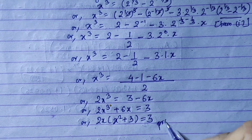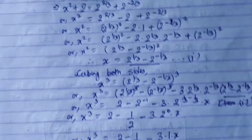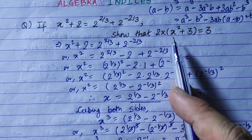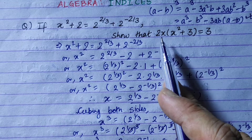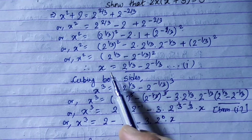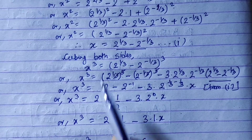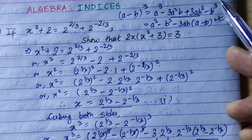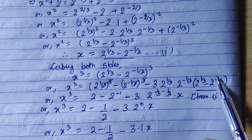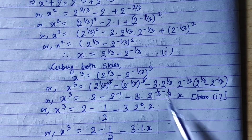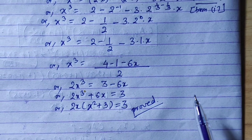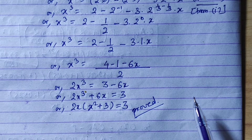So to summarize: we were given x squared plus 2, we found the value of x, then found x cubed by cubing both sides, used the formula, replaced the x term, and simplified to prove the result. This is how you approach this type of question easily.